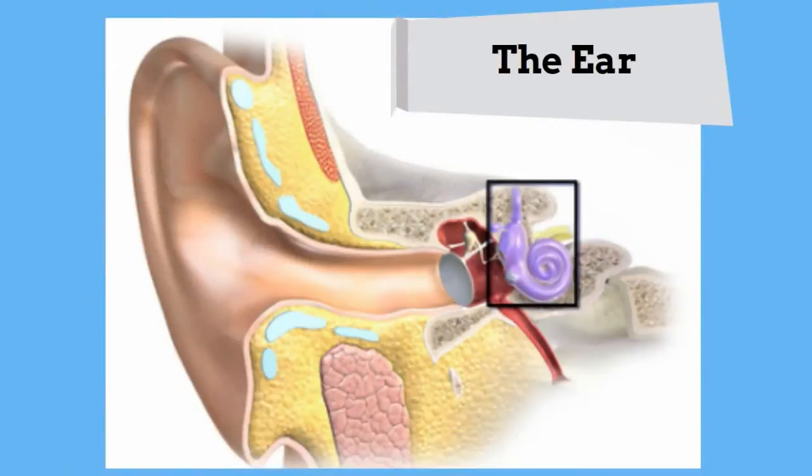The ear can be divided into three parts: the outer ear, the middle ear, and the inner ear.